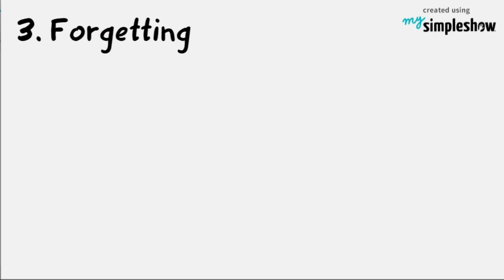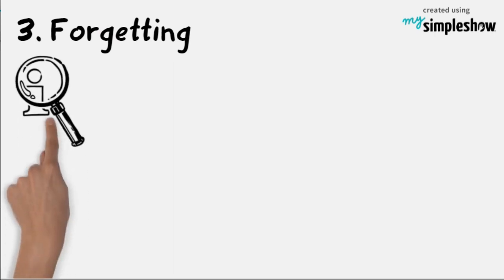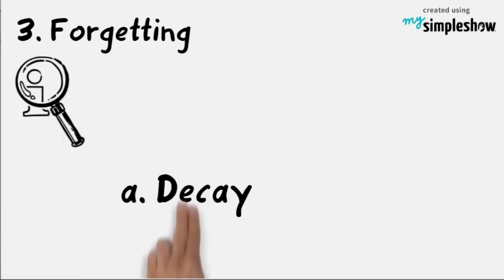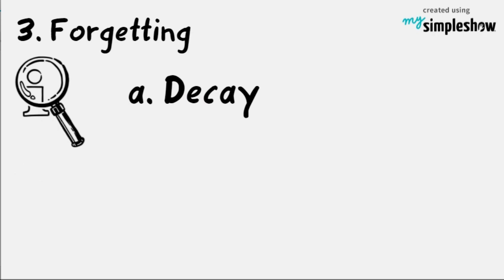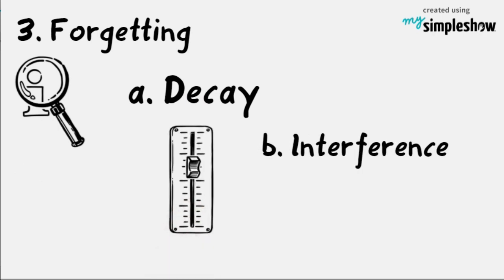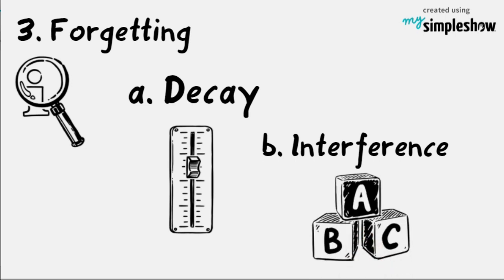Three, forgetting. It is the inability to retrieve or access information when needed. First is decay. Information is not attended to and eventually fades away. Interference: new or old information blocks access to the information in question.